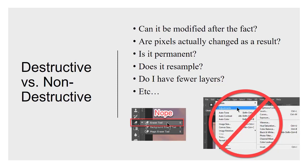Destructive versus non-destructive — we've talked about this before. The ideal workflow is to make sure that whatever you're doing isn't going to lock you in or commit you to sticking with that change; you should be able to undo it. If pixels are actually changed as a result, it's a destructive edit. If it's permanent — if you have to undo 27 other changes to get back to it — then it is destructive.